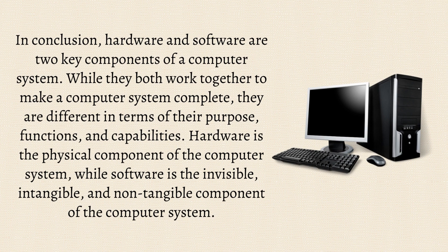In conclusion, hardware and software are two key components of a computer system. While they both work together to make a computer system complete, they are different in terms of their purpose, functions, and capabilities. Hardware is the physical component of the computer system, while software is the invisible, intangible, and non-tangible component of the computer system.